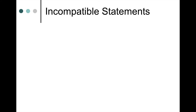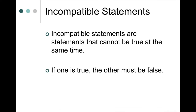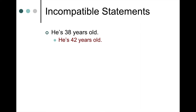So that's logical implication. Next, we can talk about incompatible statements — two types of incompatible statements: contradictories and contraries. Generally speaking, incompatible statements are statements that cannot be true at the same time. If one is true, then the other must be false, because they can't both be true. Here's an example: He is 38 years old. He is 42 years old. If we're talking about the same person, these statements cannot be true at the same time, so they are incompatible statements.